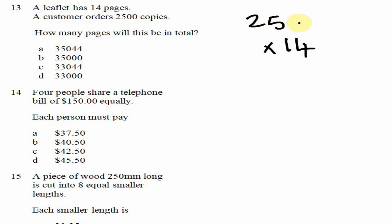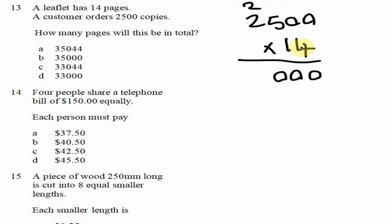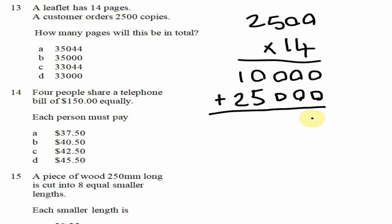4 times 0 is 0, 4 times 0 is 0, 4 times 0 is 0, 4 times 5 is 20 — carry 2. 4 times 2 is 8, plus 2 is 10. Then multiplying with 1: 1 times 0 is 0, placeholder 0, 1 times 0 is 0, 1 times 5 is 5, 1 times 2 is 2. Adding up: 5 plus 0 is 5, 2 plus 1 is 3. Our answer is 35,000, which is option B.